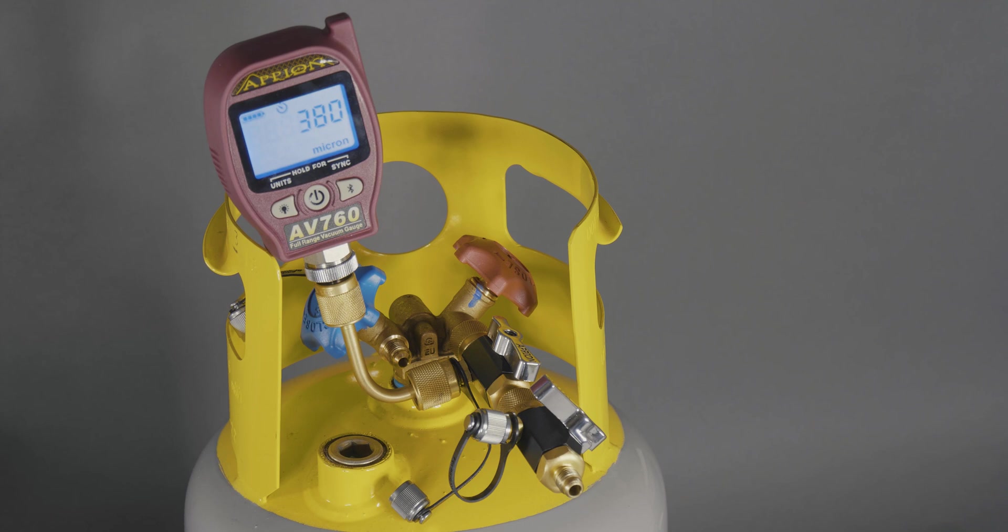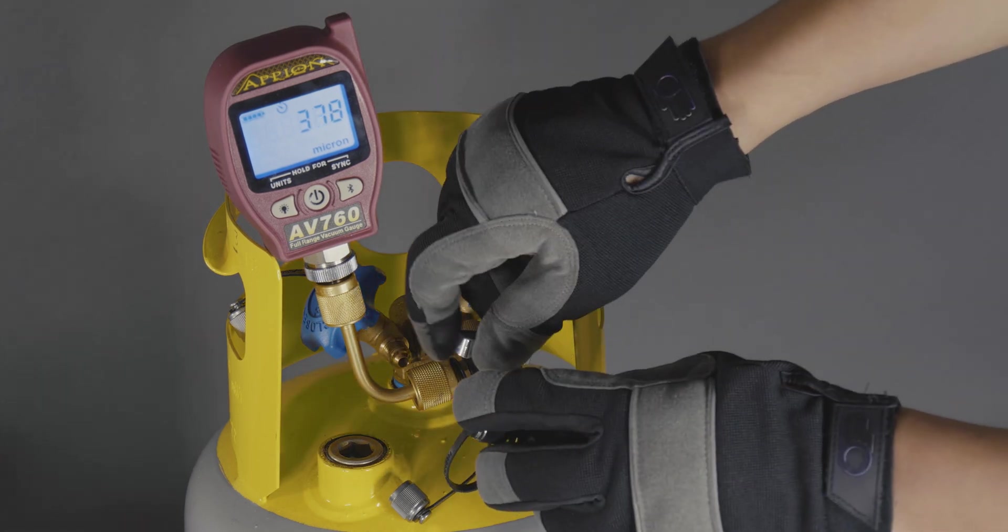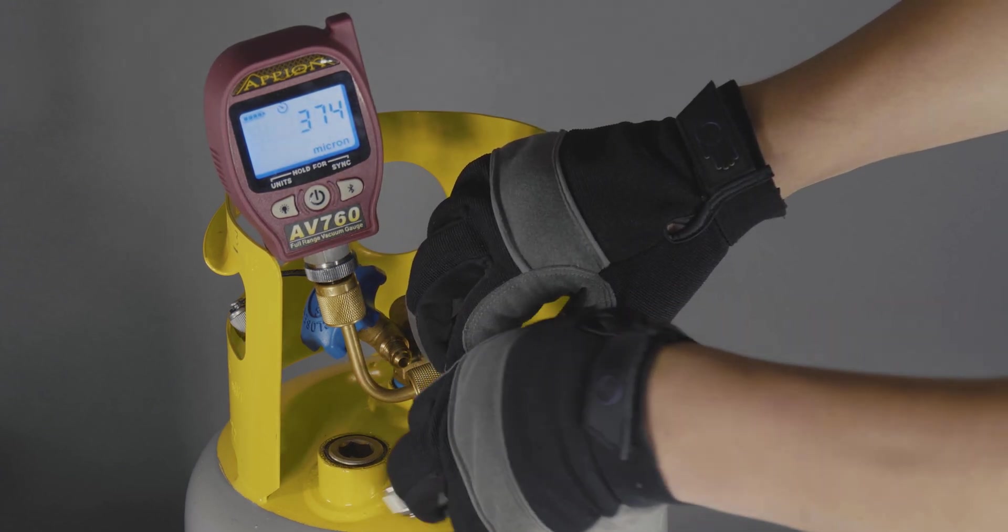Next, we will test the ball valve seals of the test tool. To do this, close the valve on the test tool and remove the known good tool.